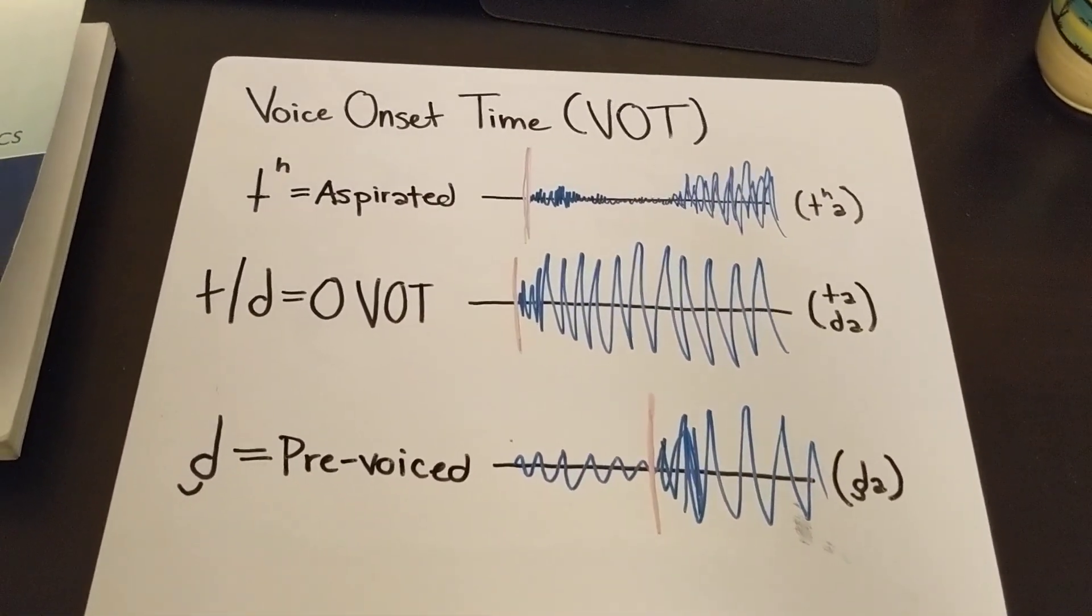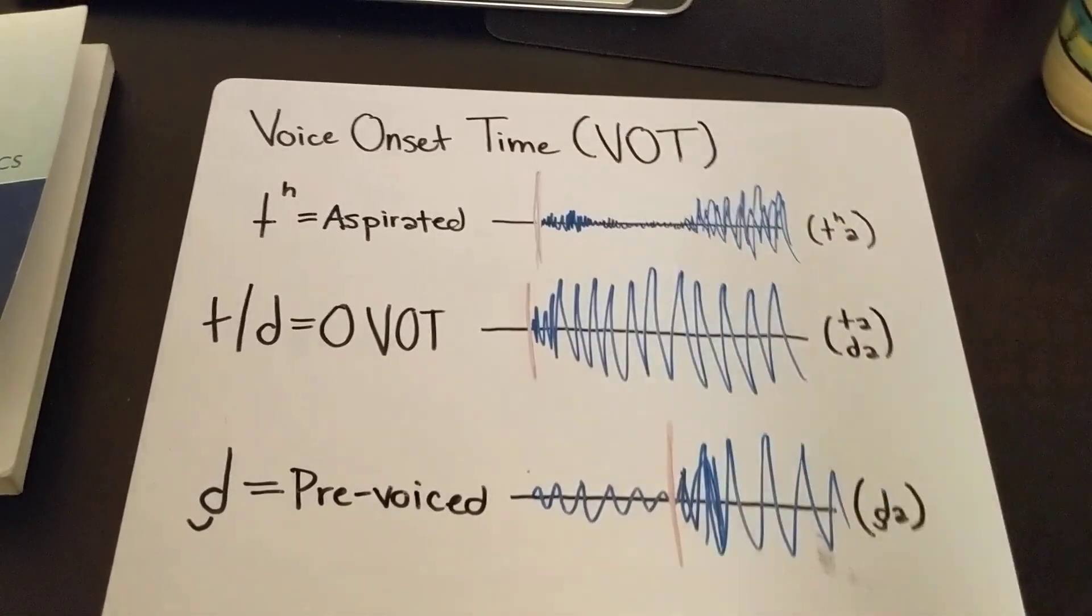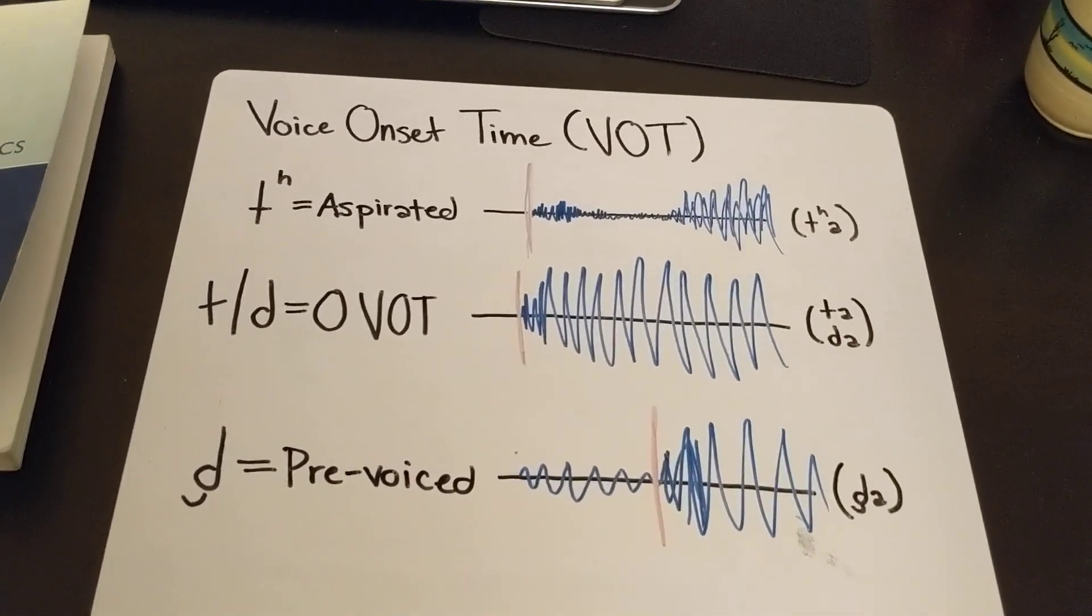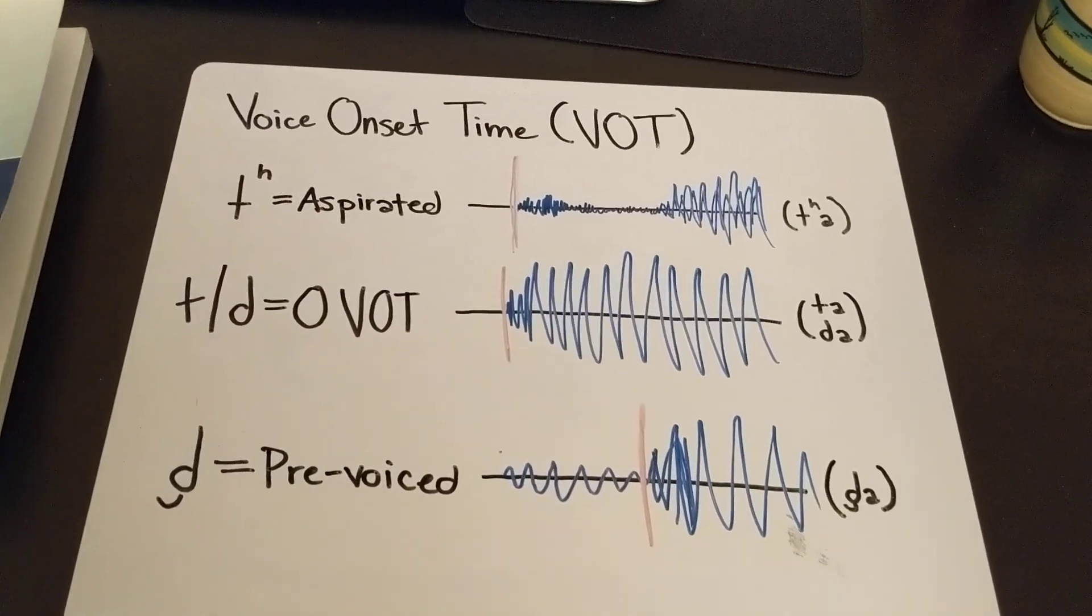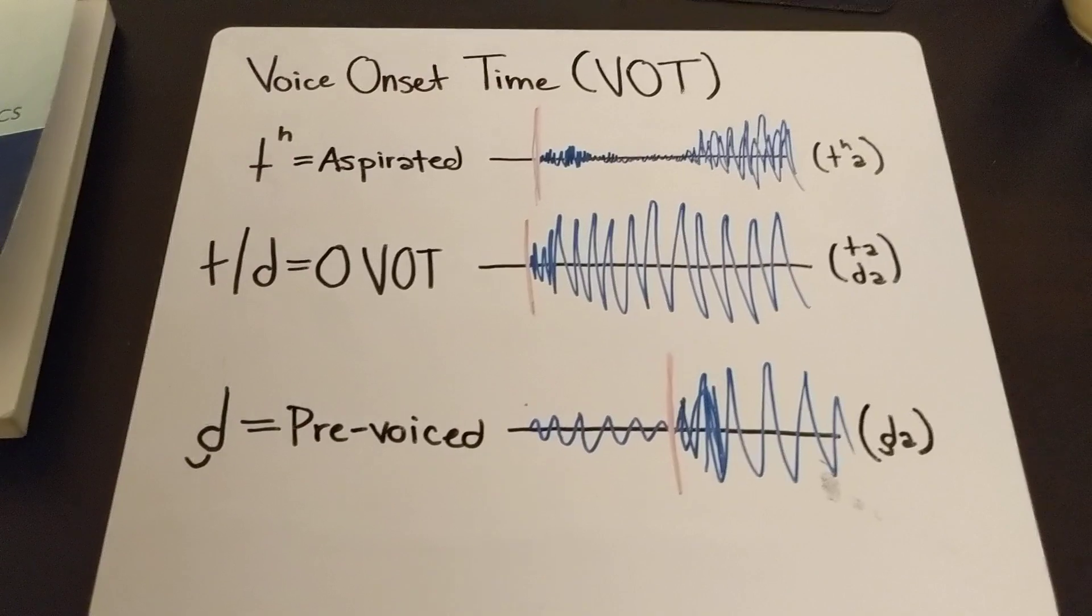So if you have the syllable TA, how long do you have between when you let go of the T closure, where you have your tongue touch to your alveolar ridge, and when you start pronouncing that vowel?